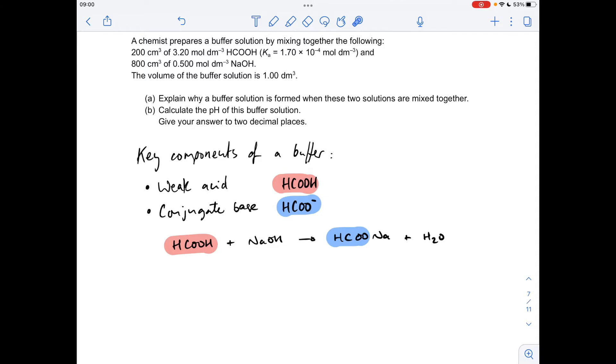So if we think about the reaction that's taking place, it's between methanoic acid and sodium hydroxide. That's going to produce sodium methanoate, so obviously that contains that methanoate ion and of course you get water.